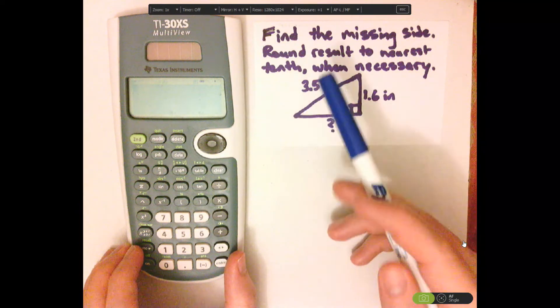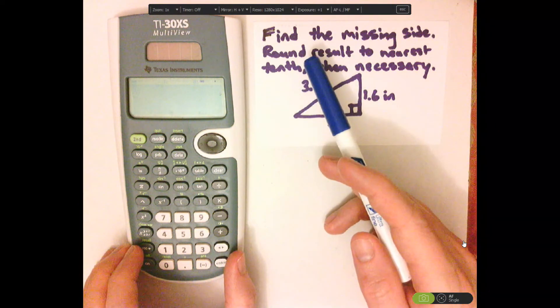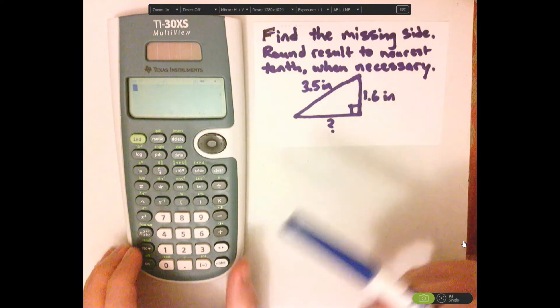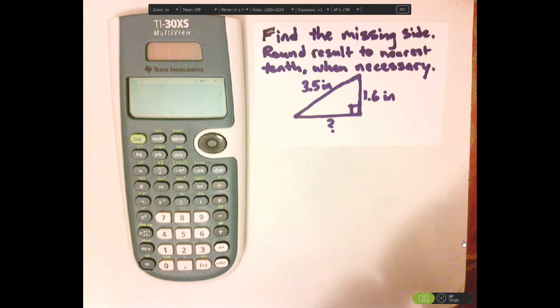So it says find the missing side, round the results to the nearest tenth when necessary. We're going to use Pythagorean Theorem here.